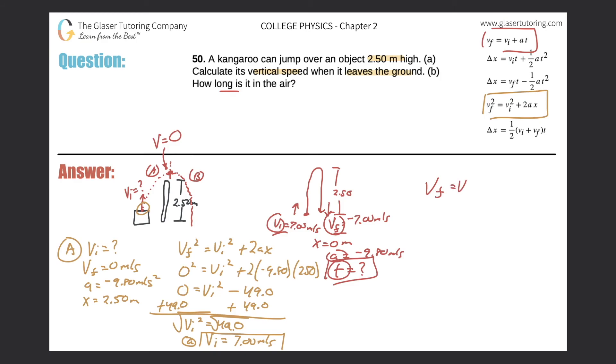So, the final velocity is equal to the initial velocity plus the acceleration times time. So, the final velocity here is negative 7.00 meters per second. The initial velocity is 7.00 meters per second. Plus the acceleration, which was negative 9.80 t.